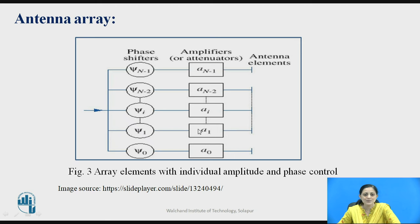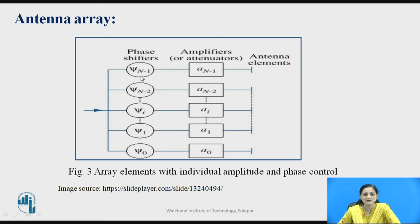For the second element, the amplitude is a₁ and the phase shift for that element is denoted as ψ₁. You can consider the individual amplitude and phase shift for each element to get the overall pattern for the antenna array system. The amplitude for the nth element is aₙ₋₁ and the phase shift is ψₙ₋₁. The number of elements are connected to each other to form the antenna array.